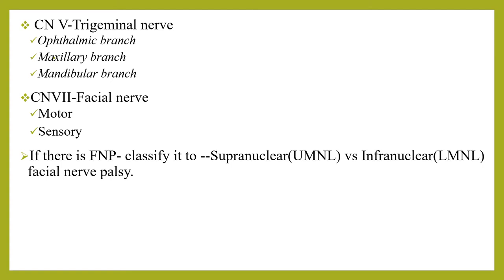In upper motor neuron lesions, the patient can close the eyes and frown but cannot move the contralateral oral commissure. This is because the upper part of the face receives innervation from both cerebral hemispheres. In lower motor neuron or infranuclear lesions, both the upper and lower parts of the face are equally affected, whereas in the supranuclear type, the upper face is preserved.